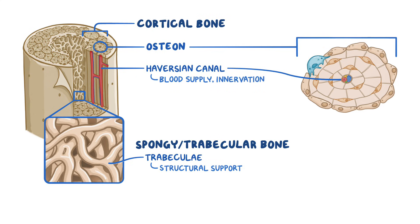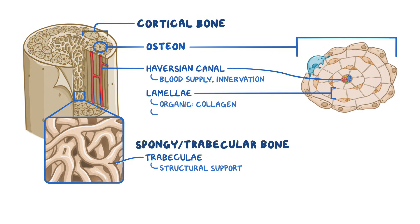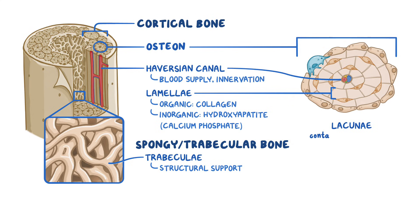Around the Haversian canals, there are concentric lamellae, which look a bit like tree rings. The lamellae have an organic part, which is mostly collagen, and an inorganic part called hydroxyapatite, which is mostly calcium phosphate. In between neighboring lamellae, there are spaces called lacunae, which contain bone cells called osteocytes.